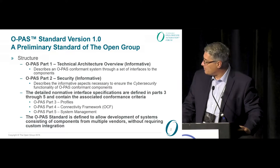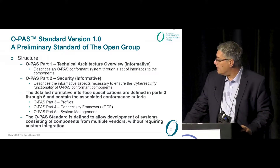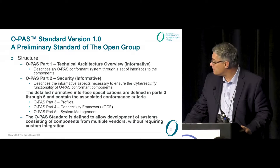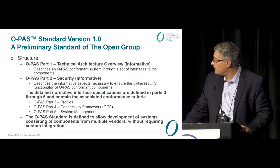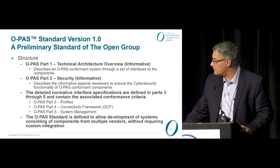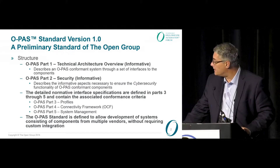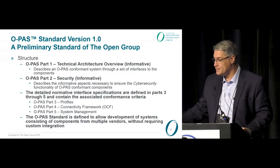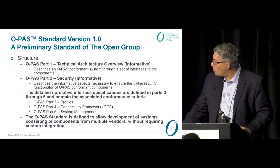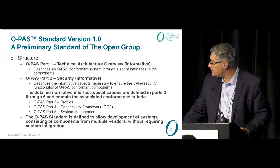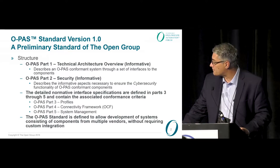The standard is broken up into five parts. Part one is focused on the technical architecture — it's an informative section that describes the conformance system through a set of interfaces to the components involved. Part two covers security, also informative, built around IEC 62443, describing the aspects to ensure cybersecurity functionality of the OPAS conformance components.